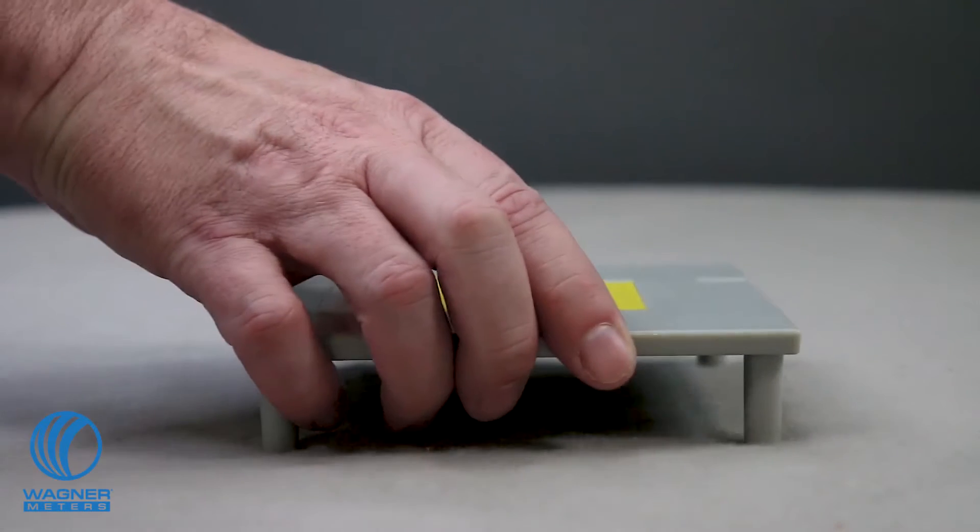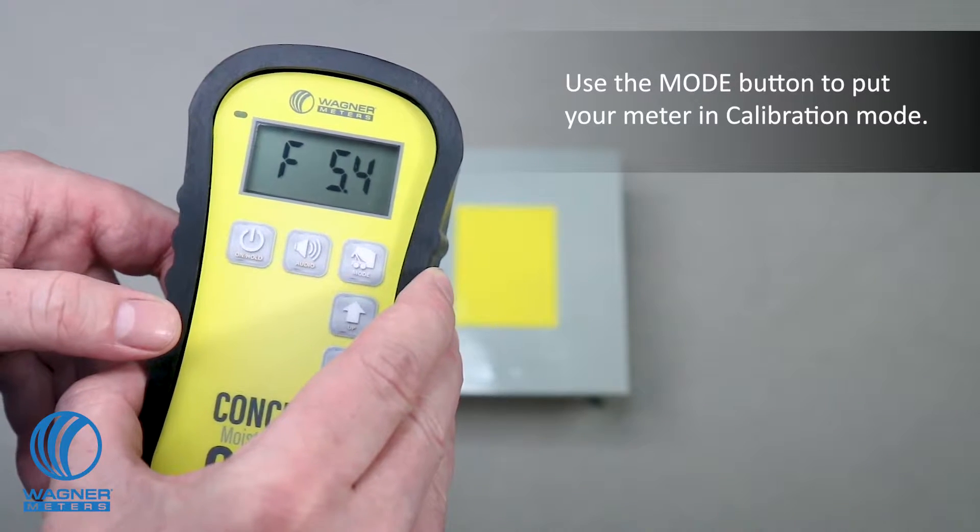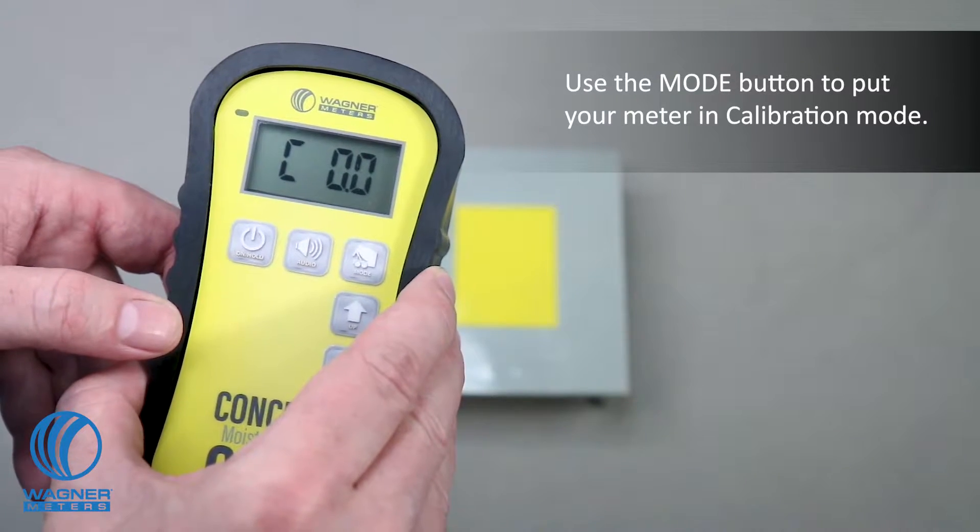Place the calibrator on its legs on a non-metallic surface. Turn the meter on and press the mode button to put your meter in calibration mode.